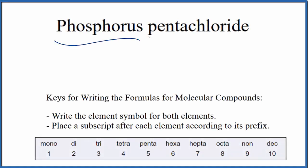To write the formula for phosphorus pentachloride, the first thing we need to do is determine what type of compound we have.